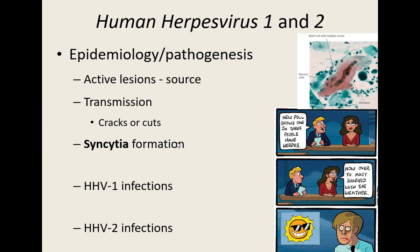For HHV-1, the top spreaders are children — kids are always touching everything with poor hygiene. For HHV-2, because it is more of a sexually transmitted disease, sexually active adolescents are the top spreaders. HHV-1 and HHV-2 are extremely common — on average, about 80% are already carriers of HHV-1 and will have picked it up at some point, usually during childhood.